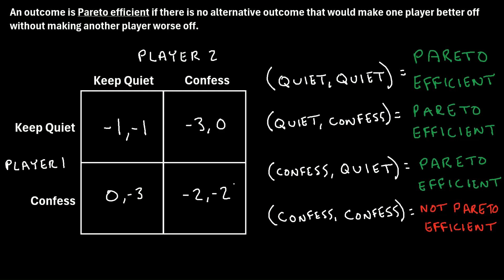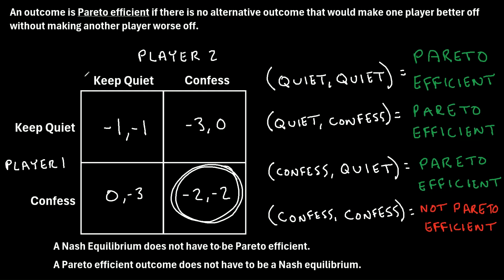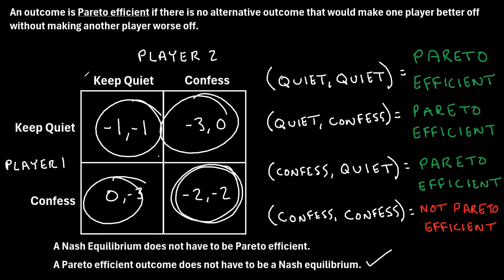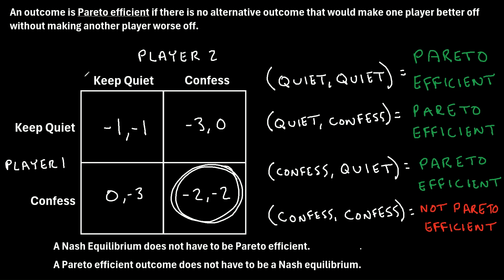Interestingly, this outcome — both confessing — is actually the Nash equilibrium of the Prisoner's Dilemma, and both players are incentivized to confess. I'll link to another video on how to find the Nash equilibrium of this game. This brings up two important points: first, a Nash equilibrium does not have to be Pareto efficient, as we see here. Second, a Pareto efficient outcome does not have to be a Nash equilibrium — the three Pareto efficient outcomes in this game are none of them the Nash equilibrium. These are important things to keep in mind when discussing Pareto efficient outcomes.